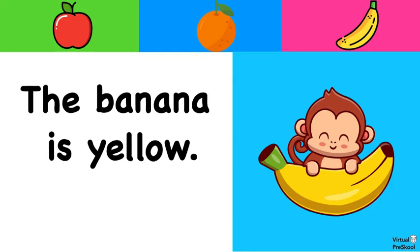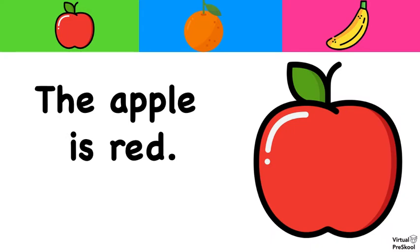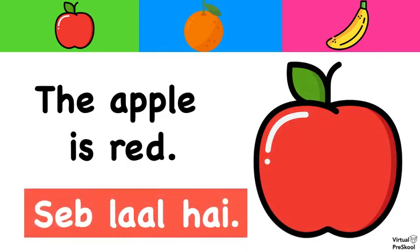So to put it together in a sentence, we say, Kela pila hai. Kela pila hai. Now what about this one? The apple is red. How would we say this in Hindi? We would say seib laal hai. Seib laal hai. Because apple is seib, we just learned, and red is laal. Seib laal hai.